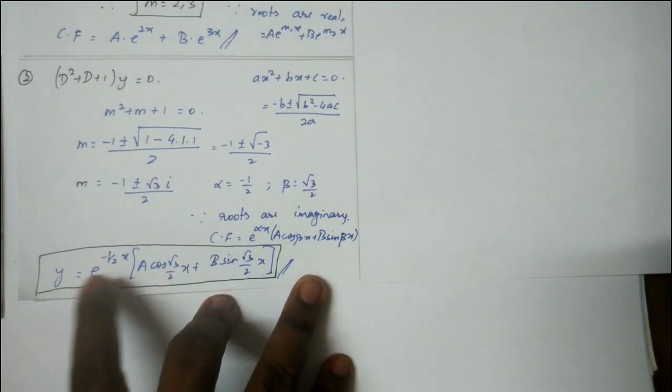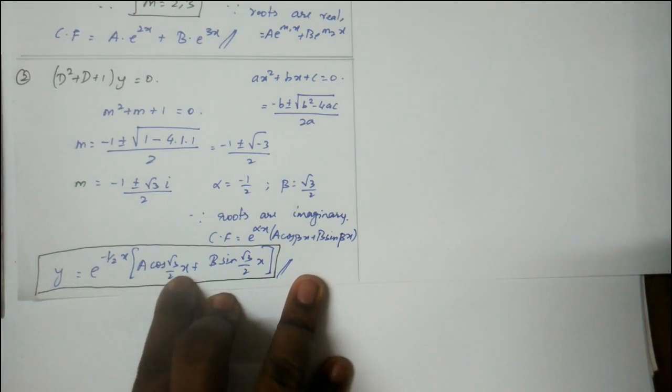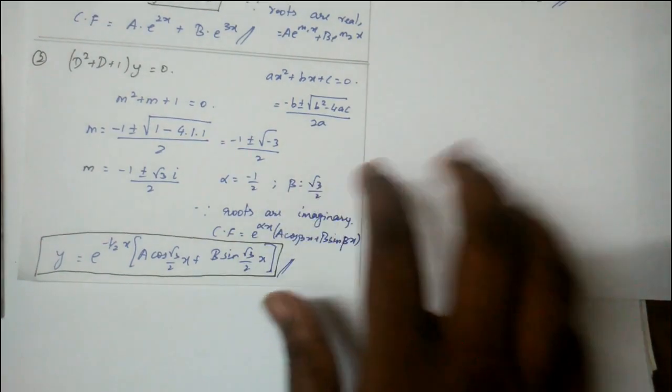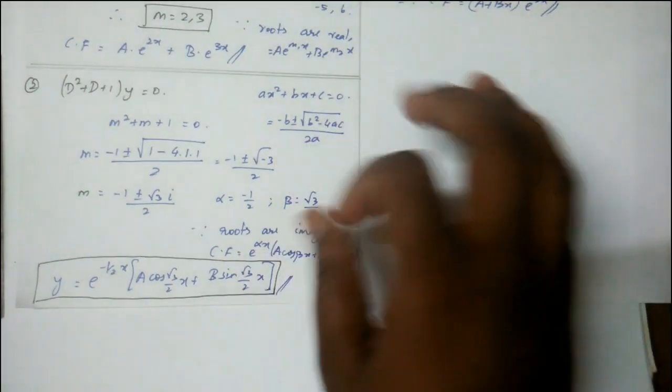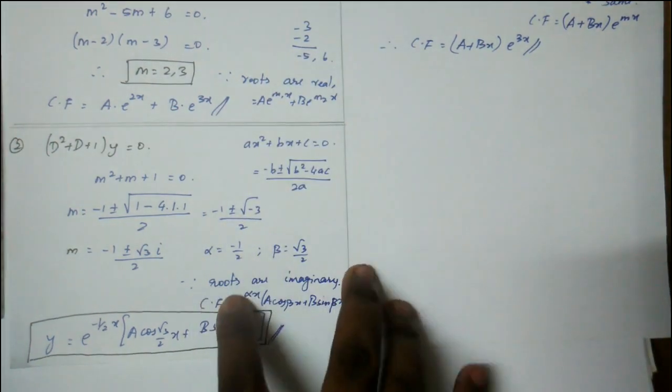The answer is e^(-x/2)(A cos(√3x/2) + B sin(√3x/2)), where beta is √3/2. So this is the imaginary case. We've learned two: roots are real and different, and roots are imaginary.